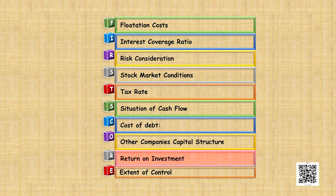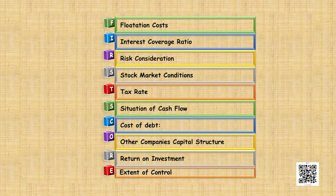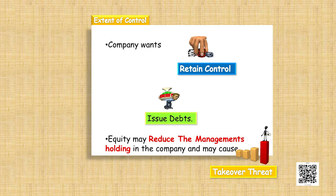If the return on investment is higher than the rate of interest, the company can use debt and practice trading on equity, which increases earnings per share. Regarding extent of control or control dilution: if the company wants to retain control it can issue debt because debt does not carry voting power. But if the company issues equity there will be dilution of control, so equity may be preferred only when the company is not concerned about control dilution.